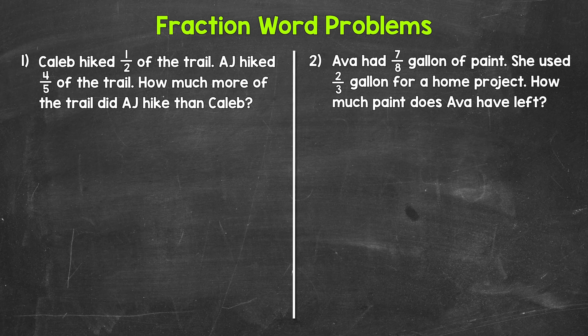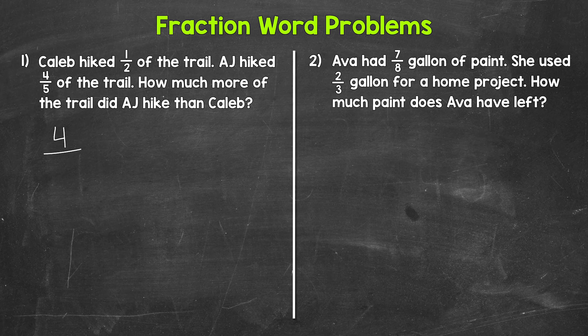Let's jump into number one, where we have Caleb hiked one half of the trail. A.J. hiked four fifths of the trail. How much more of the trail did A.J. hike than Caleb? We are finding the difference between the amount of the trail Caleb hiked and the amount of the trail A.J. hiked. Whenever we find the difference between two values, we subtract. Now, A.J. hiked more of the trail, so that's the fraction that's going to come first. Four fifths is greater than one half, so we need to do four fifths minus one half.